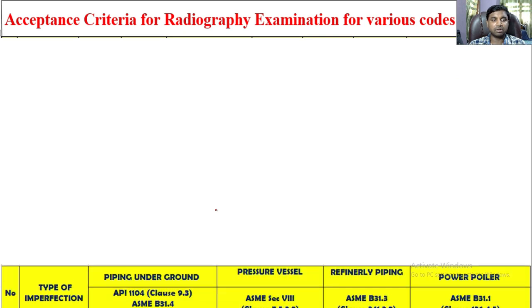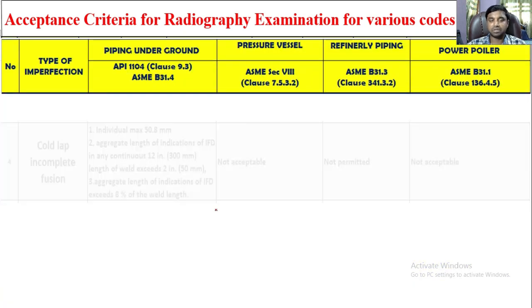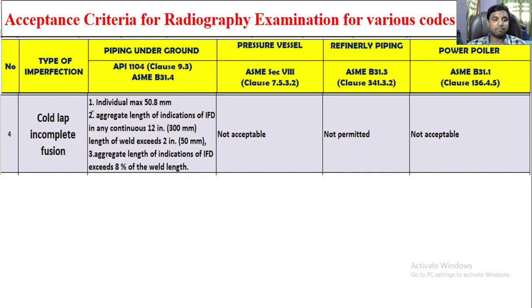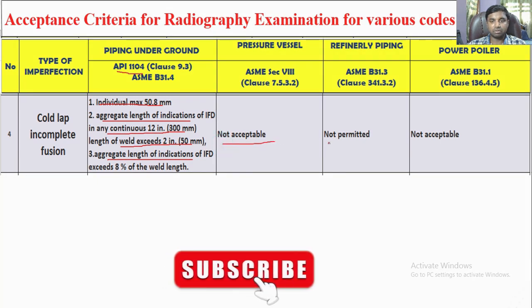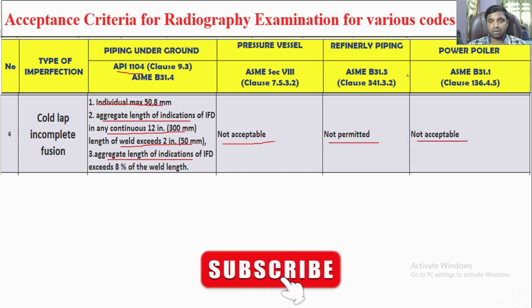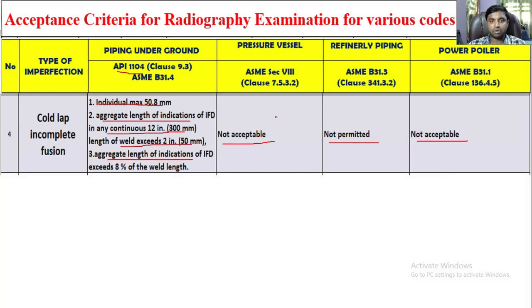Second type — incomplete fusion with mismatch (cold lap). Individual maximum 50.8 mm. For aggregate per API 1104: IFD in any continuous 12-inch (300 mm) length exceeding 2 inches will be rejected. If aggregate length of IFD exceeds 8% of the total weld length, it will also be rejected. Not permitted or acceptable in ASME B31.1, B31.3, and ASME Section VIII.